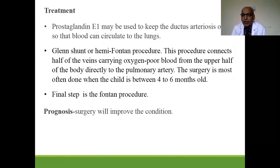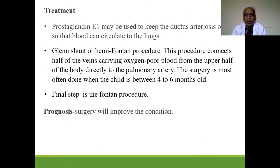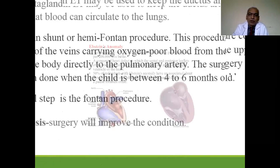The first aim is to keep the ductus arteriosus open using prostaglandins. Corrective surgery is done in the form of a Glenn shunt or hemi-Fontan procedure, with the final step being the Fontan procedure. Prognosis is improved by surgery.